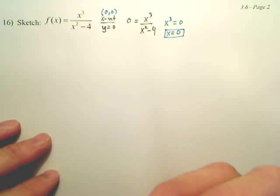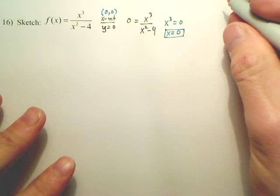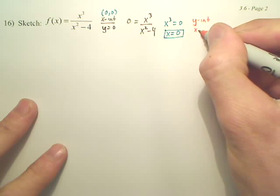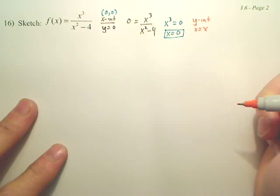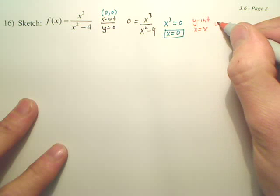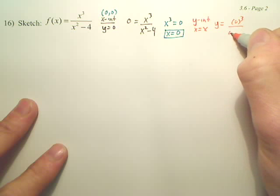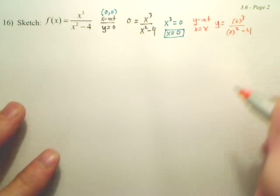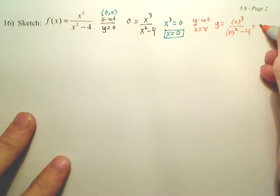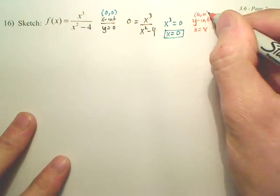But we could have other y intercepts. Now, to find a y intercept, you set x equal to 0. And so we go y equals 0 cubed over 0 squared minus 4. Don't we get 0 again? So the only value is (0, 0).